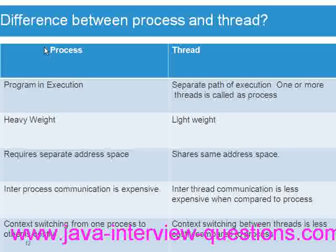Third point is related to address space. Processes require separate address space, whereas threads share the same address space. Address space refers to variables, data, and so on.